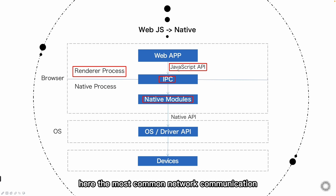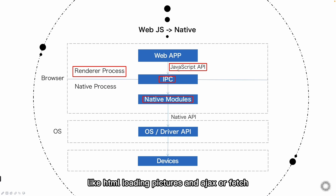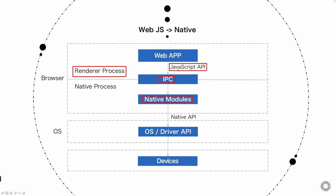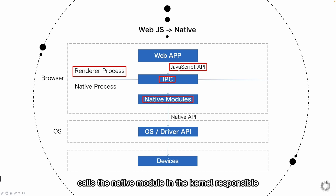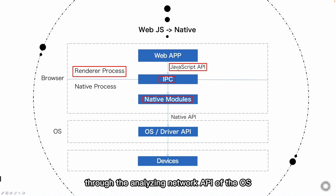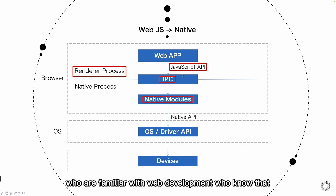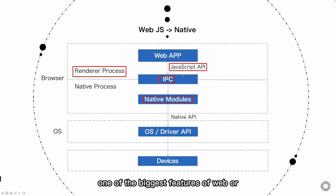Let's take an example here. The most common network communication we launch on the web, like HTML loading pictures and Ajax or Fetch — the process is actually like this: the browser calls the native module in the kernel responsible for the network, and in the native process operates through the underlying network API of the OS, and finally returns the result to JS. Those familiar with web development would know that such I/O operations are generally asynchronous in JavaScript.